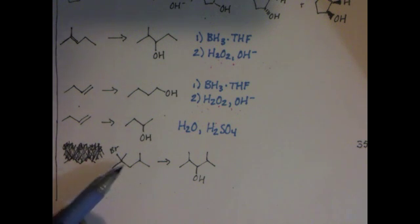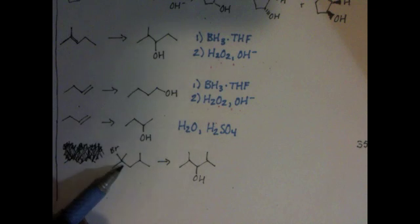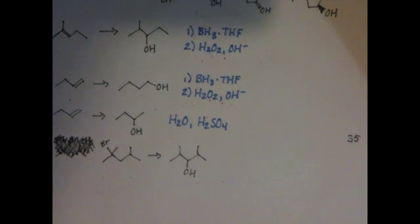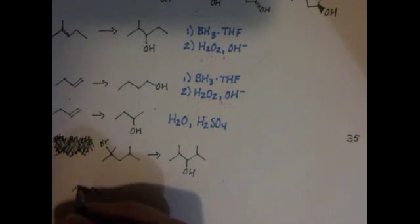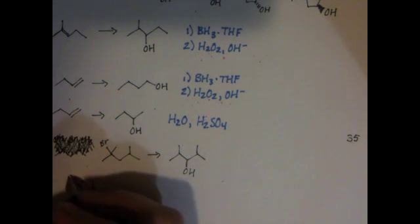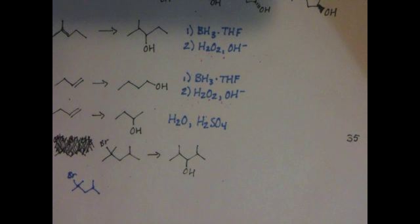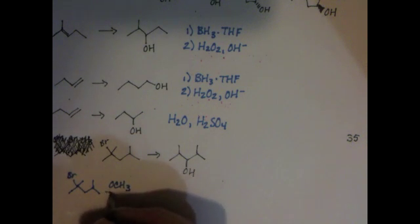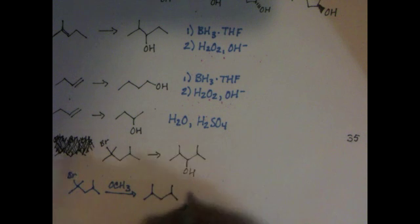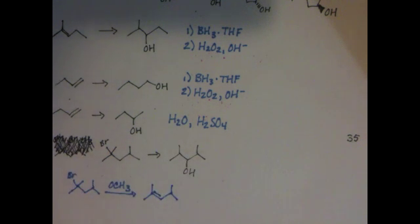So we're going to take this alkyl halide and turn it into an alkene. We're going to use just a regular base like my favorite, methoxide. And that will put a carbon-carbon double bond right there.